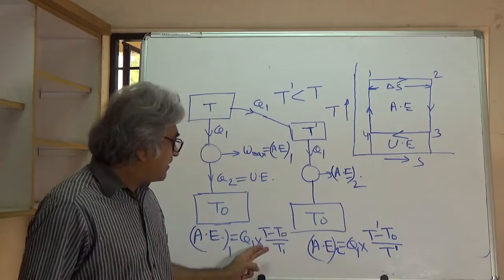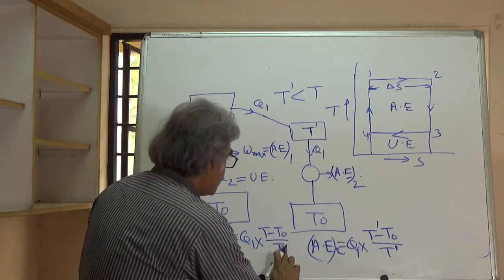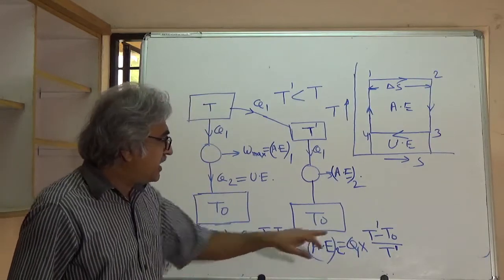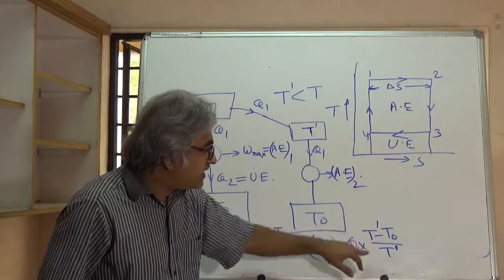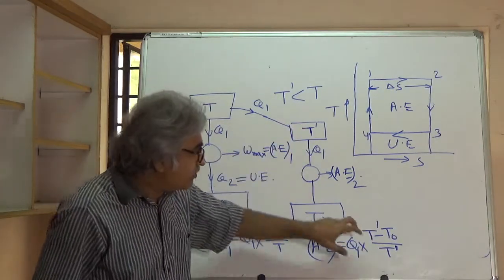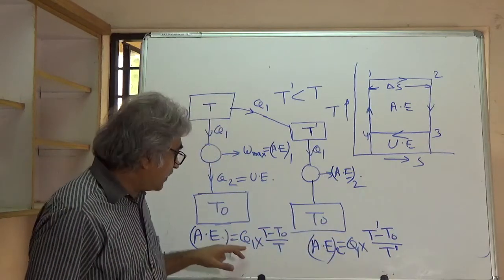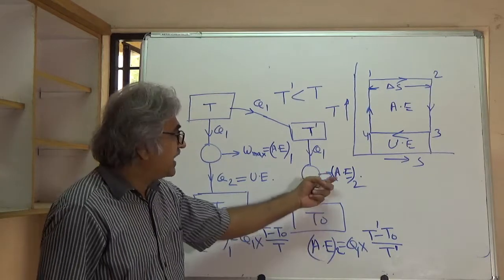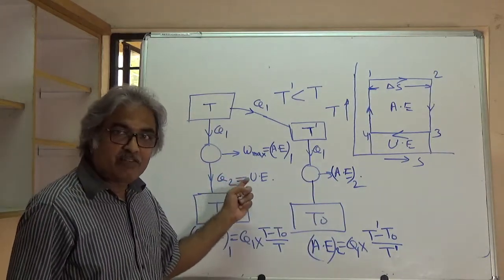The efficiency term (T dash minus T0) upon T dash is obviously less than (T minus T0) upon T, because the source temperature T dash is lower. So this efficiency term is reduced. The amount of heat is the same in both cases. Therefore, the available energy you get from the new case will be less than from the original case.